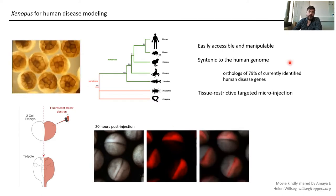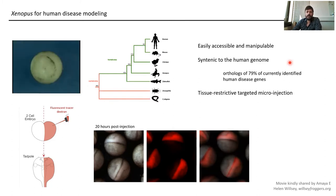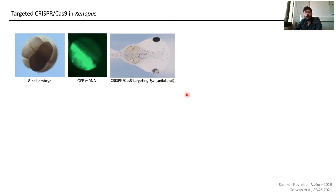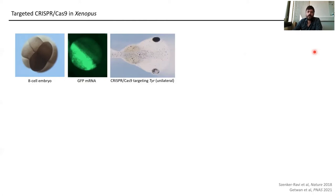This allows us to deliver experimental manipulations only to one side of the developing frog tadpole. In an eight-cell embryo, the pigmentation is a dead giveaway of which cell type gives rise to which structure. If we target the left side by injecting an mRNA — in this case GFP — it is nicely retained on one side. More interestingly, by doing CRISPR-Cas9 targeting only on one side, we create half-transgenics where one side is still normal and the other side the gene is edited. Here we are editing tyrosinase, which is important in pigment production within the frog.